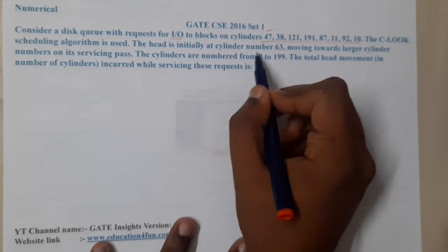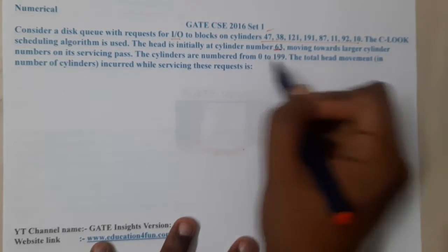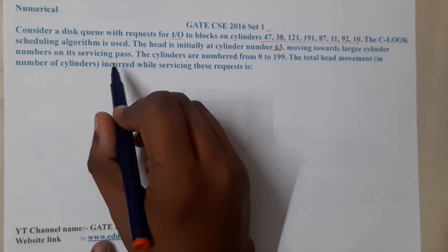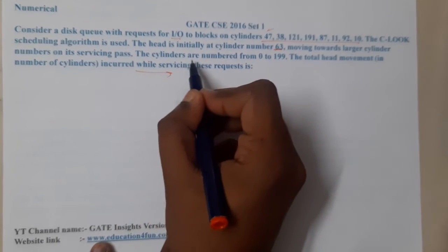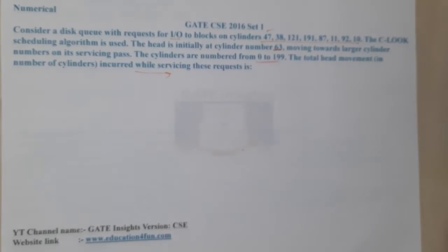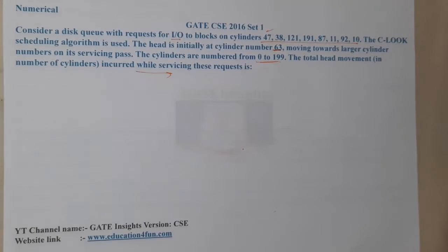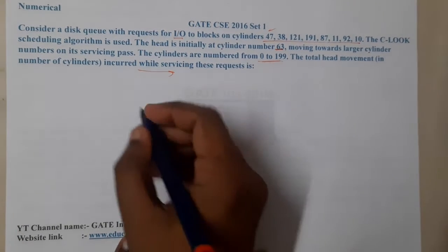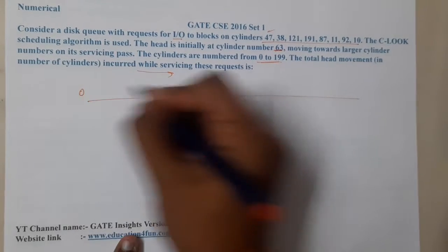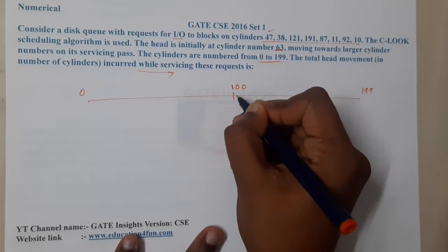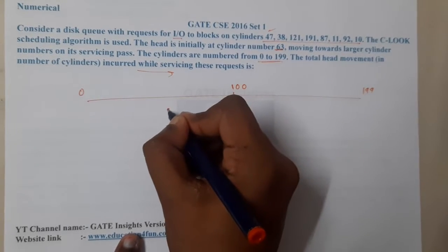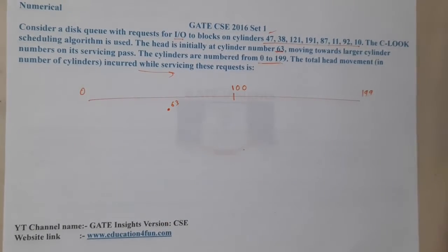The head is initially at cylinder 63 and it is moving towards the largest cylinder. The cylinders are numbered from 0 to 199, so the center point is at 100. We are starting at 63, so I am doing some approximations here.